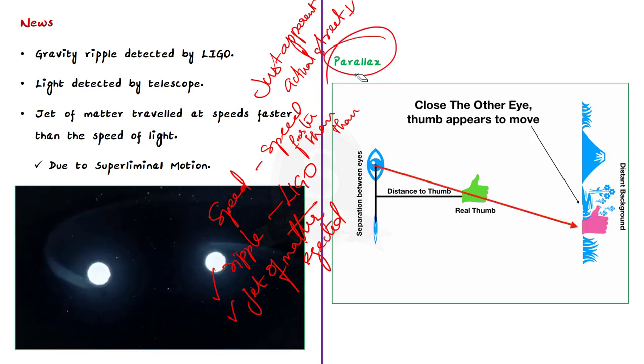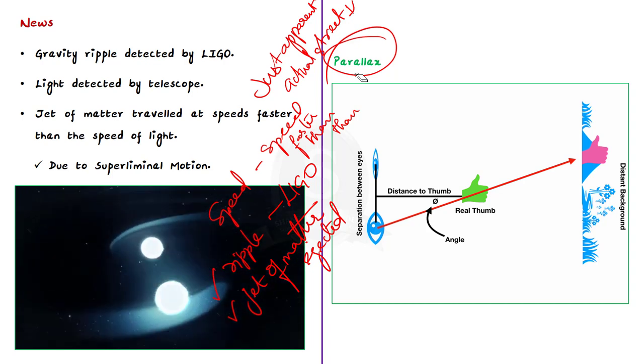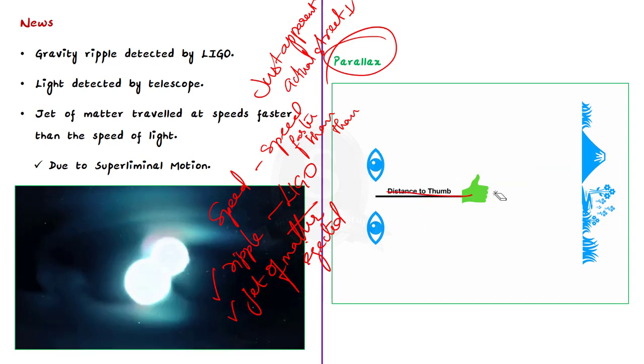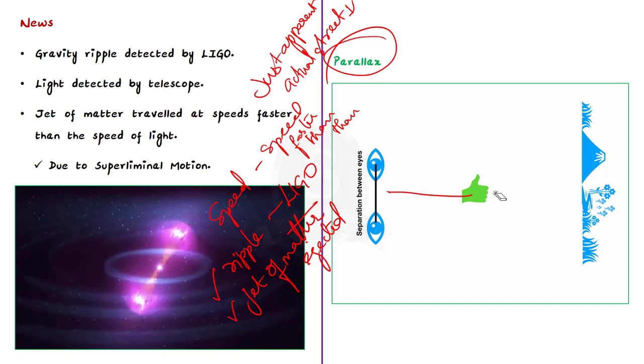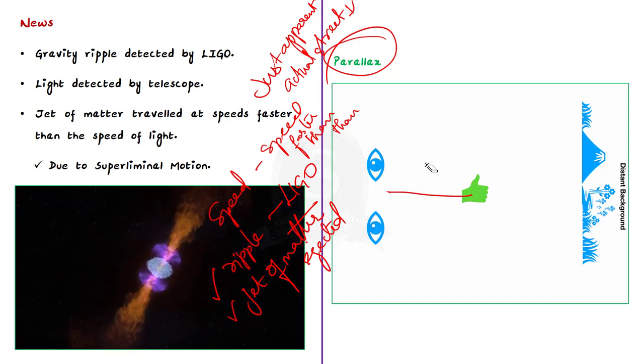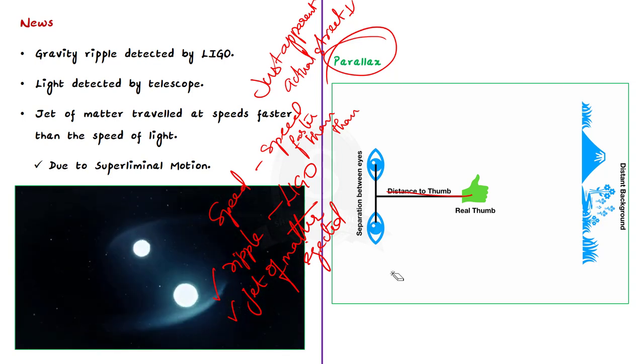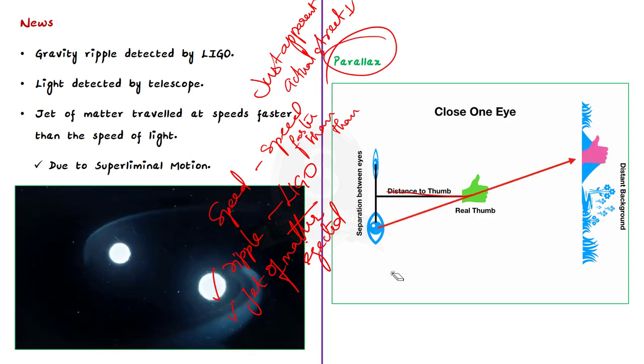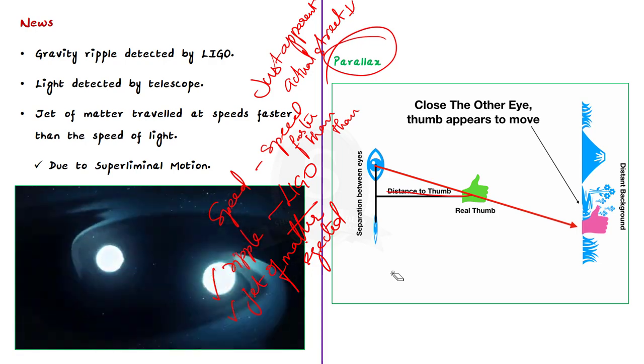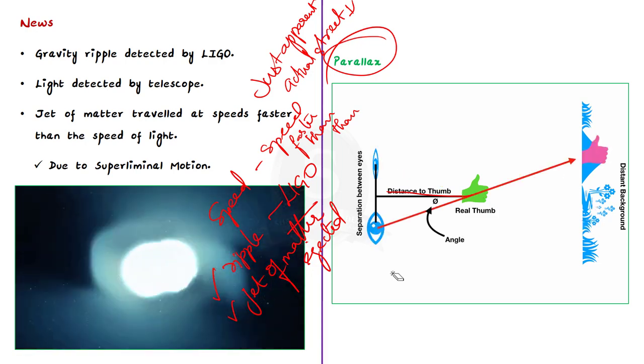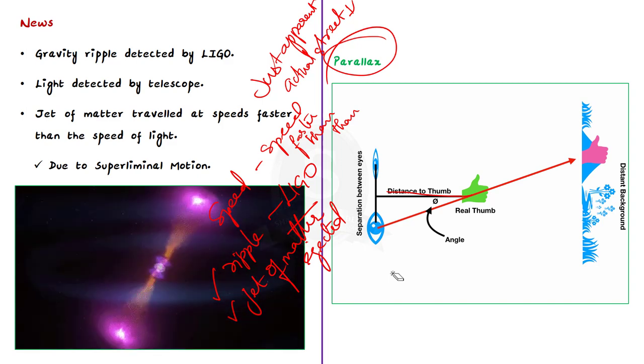They find the distance using parallax. It works like this: Hold out your hand. Close your right eye and place your extended thumb over a distant object. Now switch eyes so that your left is closed and your right is open. Your thumb will appear to shift slightly against the background.